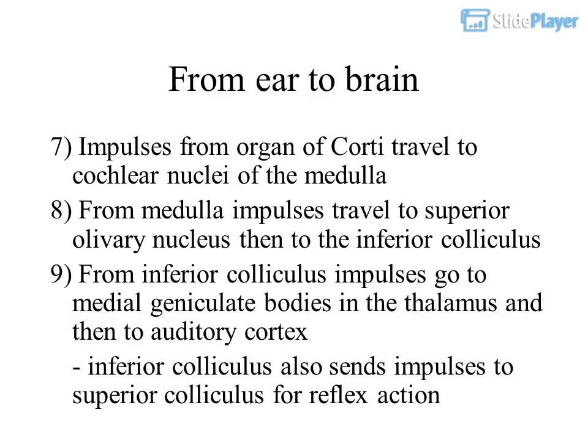Impulses from the organ of Corti travel to the cochlear nuclei of the medulla. From the medulla, impulses travel to the superior olivary nucleus, then to the inferior colliculus. From the inferior colliculus, impulses go to the medial geniculate bodies in the thalamus, and then to the auditory cortex. The inferior colliculus also sends impulses to the superior colliculus for reflex action.